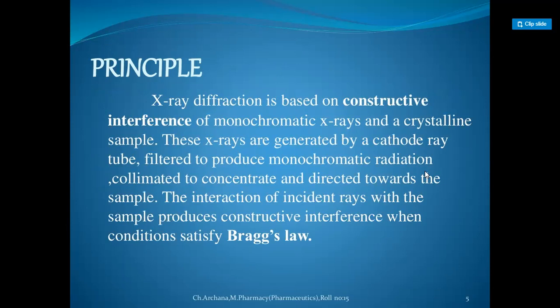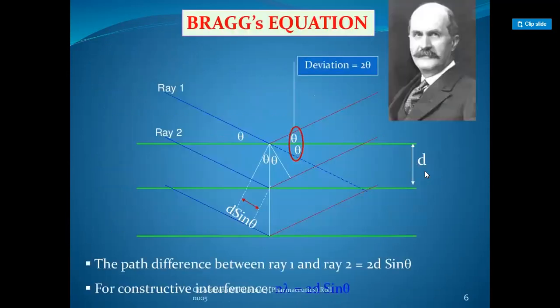The principle of X-ray diffraction is based on constructive interference of monochromatic X-rays and a crystalline sample. These X-rays are generated by a cathode ray tube, filtered to produce monochromatic radiation, collimated to concentrate, and directed towards the sample. The interaction of the incident rays with the sample produces constructive interference when conditions satisfy Bragg's law.